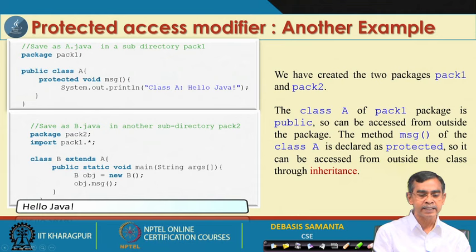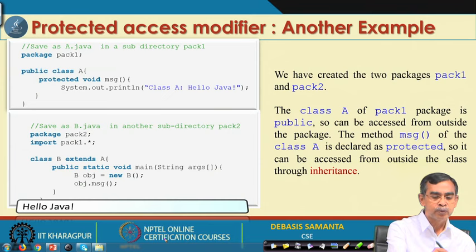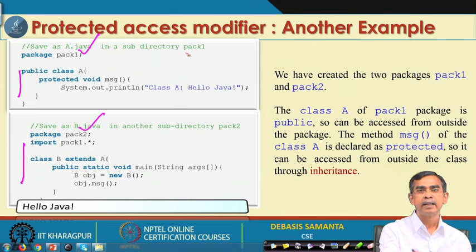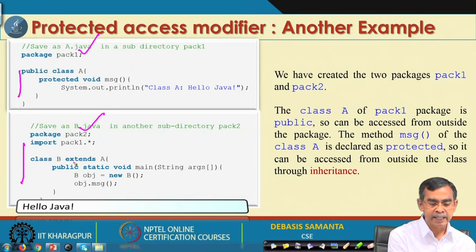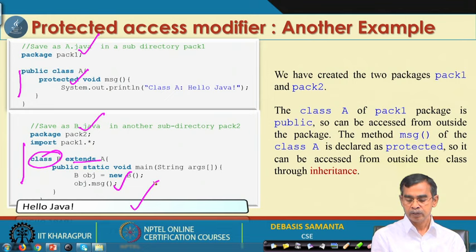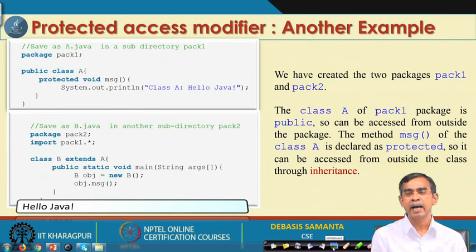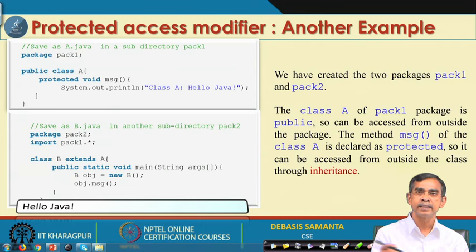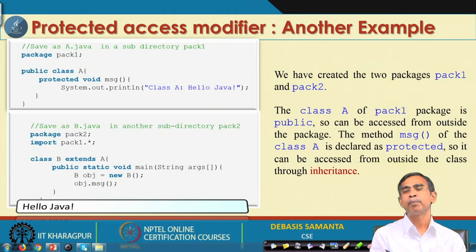Here is the same example in a slightly different form. Class A is saved in A.java in one directory, and class B is saved in B.java in a different directory, with class B extending class A. Since B is a subclass of superclass A, all protected members — such as the message method — are accessible to class B, giving valid output. Protected means only the subclass that inherits the superclass can access it, regardless of whether they are in the same file, same directory, or different directories.